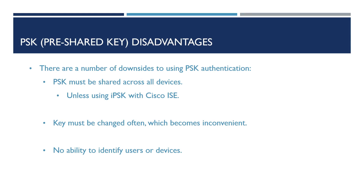There are also a number of downsides to using pre-shared key authentication. The same pre-shared key must be configured on all devices, though Cisco's identity pre-shared key feature within Cisco ISE allows a single SSID to support multiple pre-shared keys, segmenting devices into separate VLANs. Without ISE, the key must be changed frequently if it's shared or discovered by unauthorized users. The key is also saved in plain text on Windows machines, and there's no easy way to identify individual users or devices on the network since all authenticate with the same key.